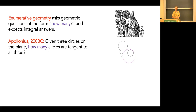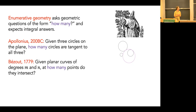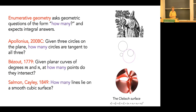Another classical example is from Bezout in the 18th century: if I have planar curves of degree m and n — meaning the vanishing of homogeneous polynomials in CP2 of degrees m and n — at how many points do they intersect? The last question I want to talk about is from Salmon and Cayley in the mid-1800s: how many lines lie on a smooth cubic surface?